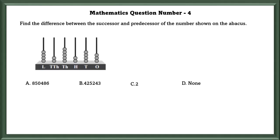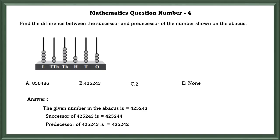Mathematics Question No. 4: Find the difference between the successor and predecessor of the number shown on the abacus. The number shown on the abacus is 4,25,243. The successor is equal to 4,25,244. And the predecessor is equal to 4,25,242. And the difference between these two is equal to 2.